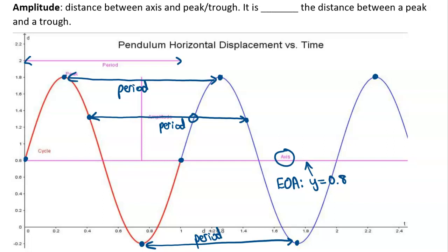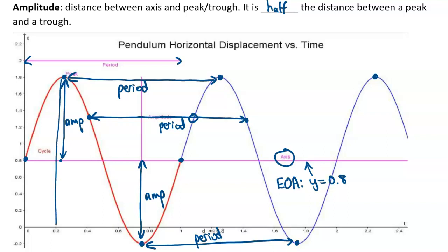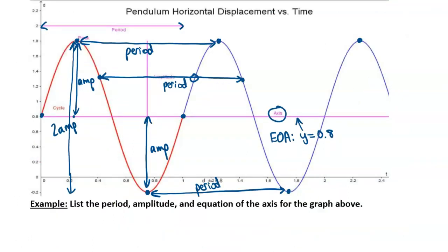The amplitude is the distance between the axis and a peak or trough. It is half the distance vertically between a peak and a trough. For example, going from the peak all the way down to the trough at negative 0.2, the amplitude is half that distance. Make sure we don't confuse the amplitude with the entire peak-to-trough distance — that full vertical distance is actually two times the amplitude.